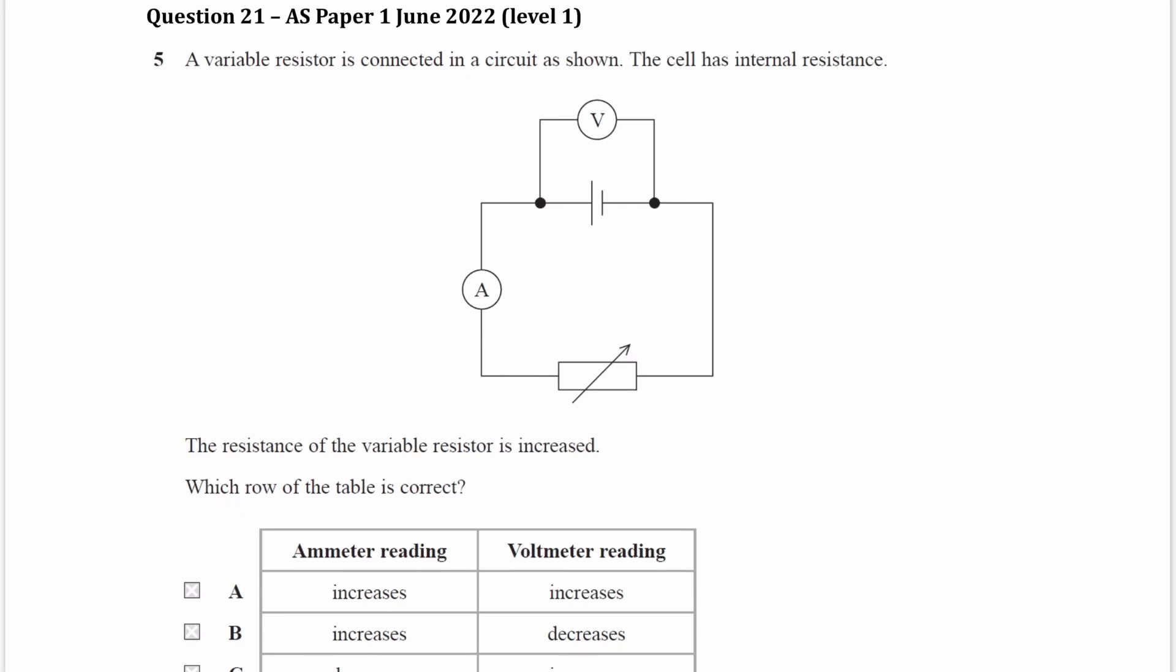So we have a variable resistor connected in series with a cell, and we're told the cell has internal resistance, so let's just quickly draw that on. There is the internal resistance, and this is the external resistance.